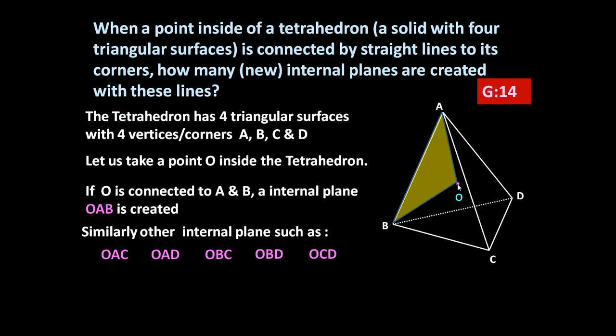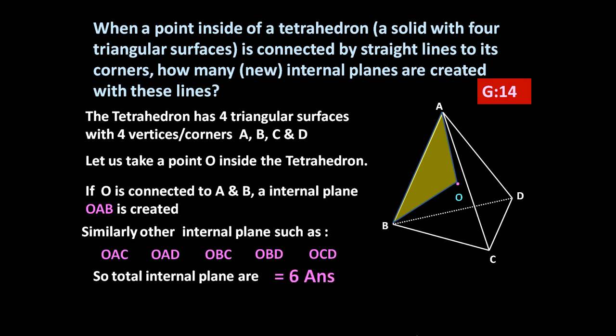So the total number of internal planes is one, two, three, four, five, six — the answer is six.